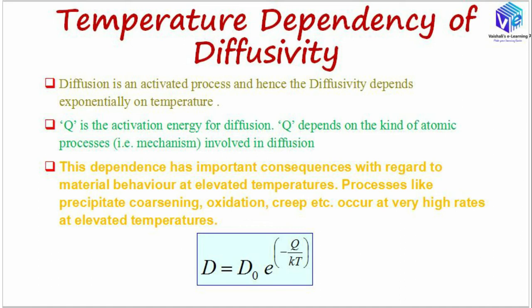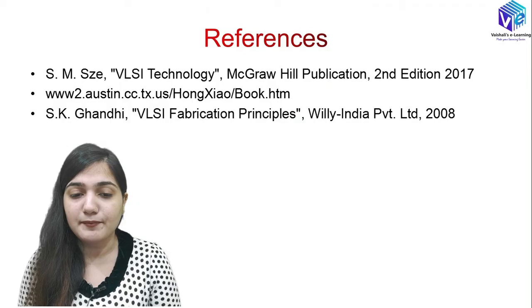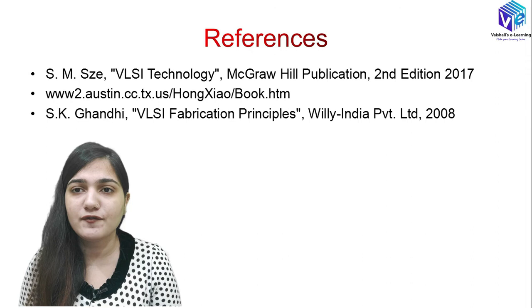Coming to the temperature dependency of diffusivity: D equals D₀ times exp(−Q / kT), where Q is the activation energy for diffusion and k is Boltzmann's constant. Diffusion is an activated process and hence diffusivity depends exponentially on temperature. Q depends on the kind of atomic process involved. At elevated temperatures, processes like precipitation, coarsening, oxidation, and creep occur at a very high rate, so controlling temperature is important.